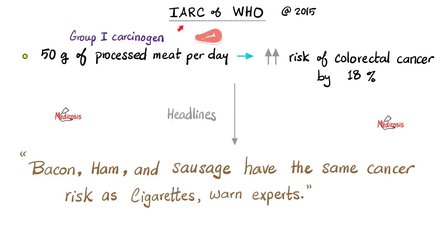In 2015, a panel of the World Health Organization announced that 50 grams of processed meat per day increases the risk of colorectal cancer by 18%. And because rule number one in the news media is 'what bleeds leads,' many journalists confused absolute risk increase with relative risk increase.